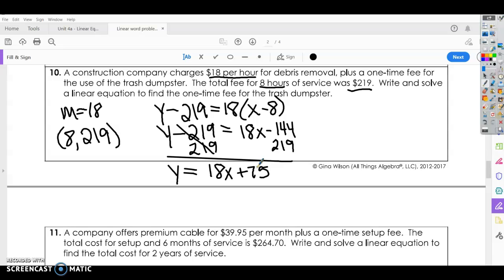So this says, a construction company charges $18 per hour for debris removal plus a one-time fee. This right here should clue you in that the one-time fee, that would be your starting point. But if you don't recognize that, you could say, write and solve a linear equation to find the one-time fee for the trash dumpster. Well, we're not having debris removed. All we're doing is having the trash emptied. So we're going to have zero hours for debris removal and plus 75. So we're just plugging in zero here. So y equals 75. So that one-time fee is your starting point.